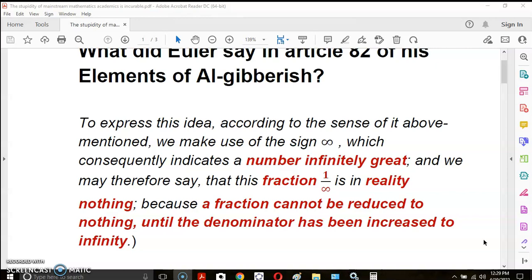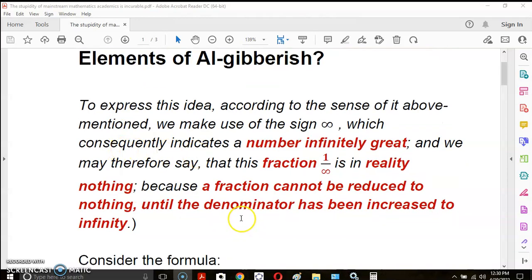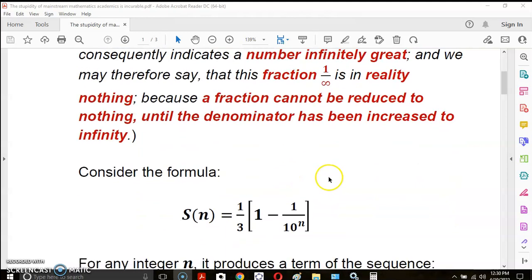So he says that this fraction, and we may therefore say that this fraction, well first of all one over that funny object there is not a fraction of any kind, is in reality nothing. Oh so I think what he meant to say there is in reality zero but it's still wrong because a fraction cannot be reduced to nothing until the denominator has been increased to infinity. This is the kind of garbage that has poisoned mathematics. It still persists to this very day.